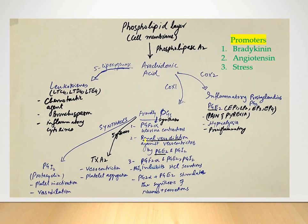PGE2 and PGI2 produce vasodilation against the naturally occurring vasoconstrictors epinephrine and norepinephrine, among many other mediators. In nutshell, there are friendly prostaglandins that maintain different normal physiological functions — PGI2 inhibits hydrochloric acid secretion, helping regulate it especially in conditions like peptic ulcer or gastric ulcer. PGF2 alpha also stimulates the synthesis and secretion of mucus, acting as protection against peptic ulcer.